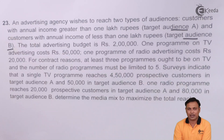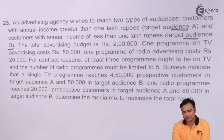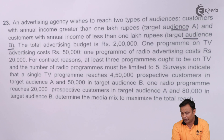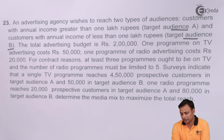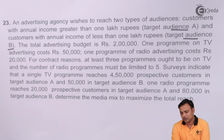The total advertising budget is 2 lakhs. One program on TV advertising costs rupees 50,000 and one program of radio advertising costs rupees 20,000. For contract reasons, at least three programs ought to be on TV, so there must be minimum three programs on TV. And the number of radio programs must be limited to five.